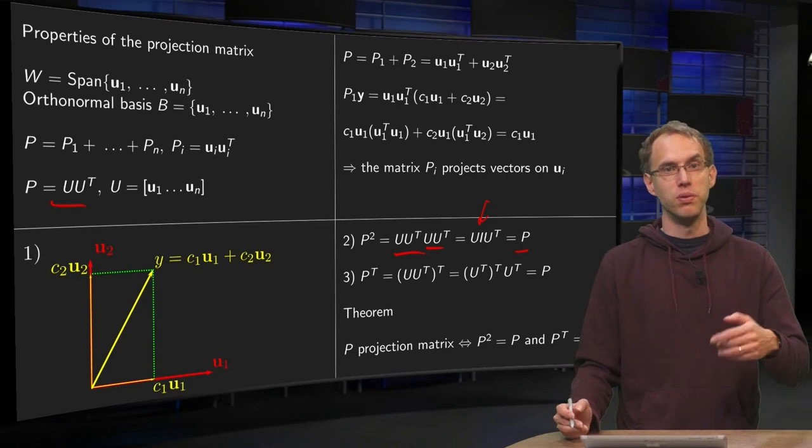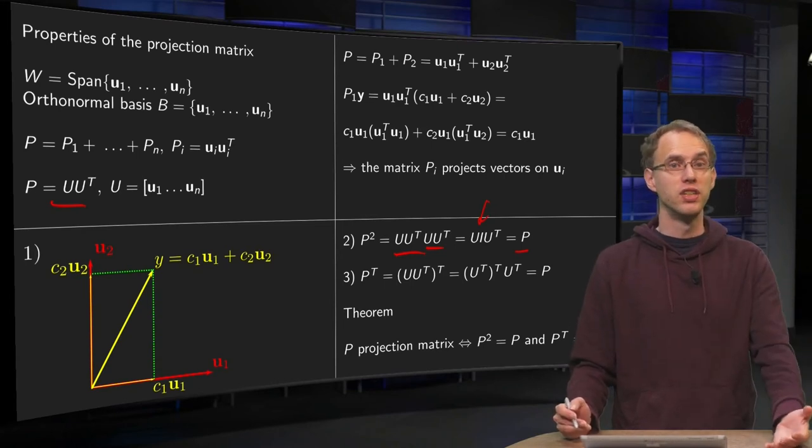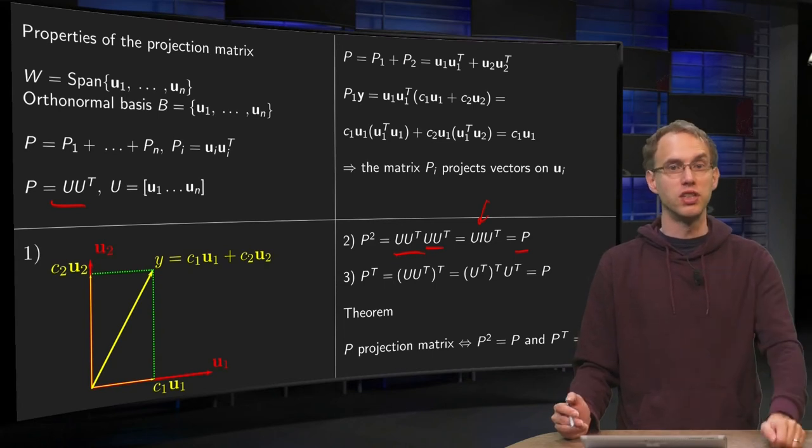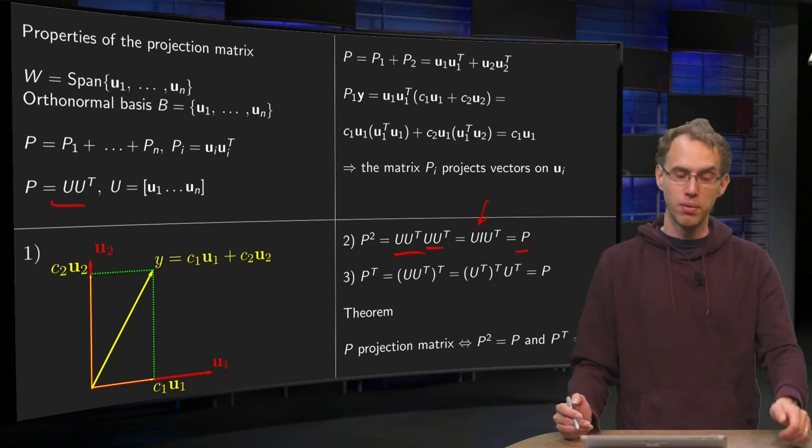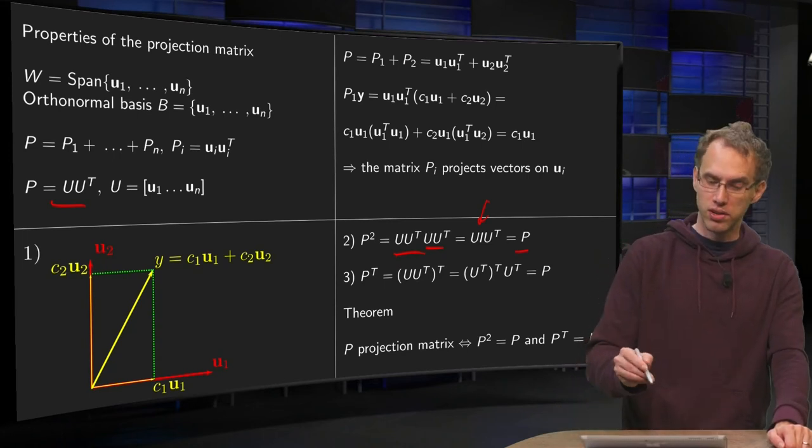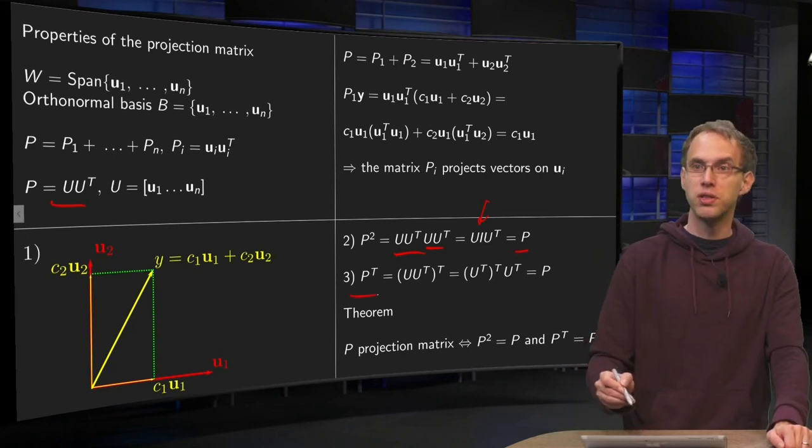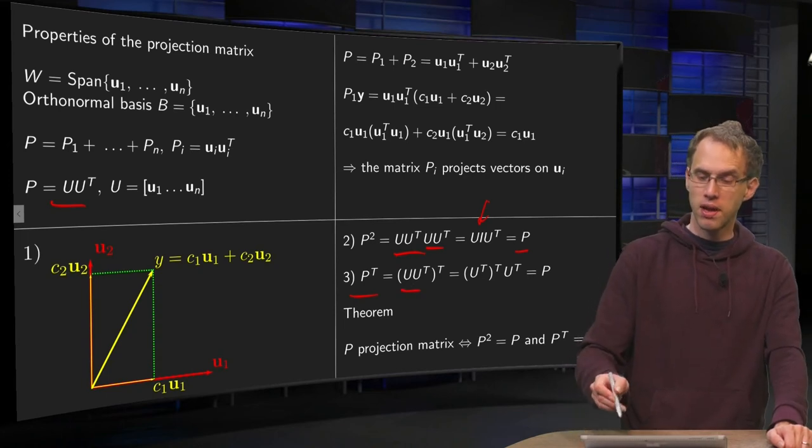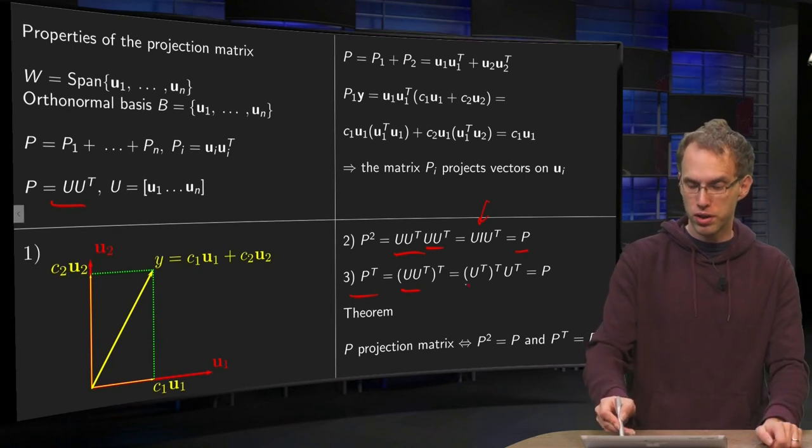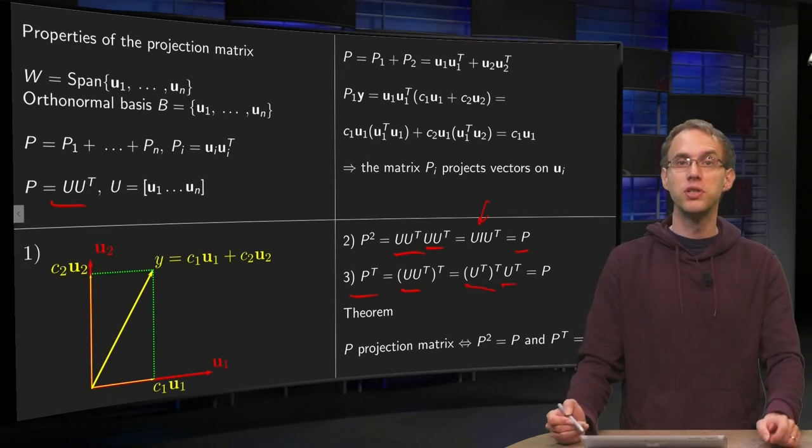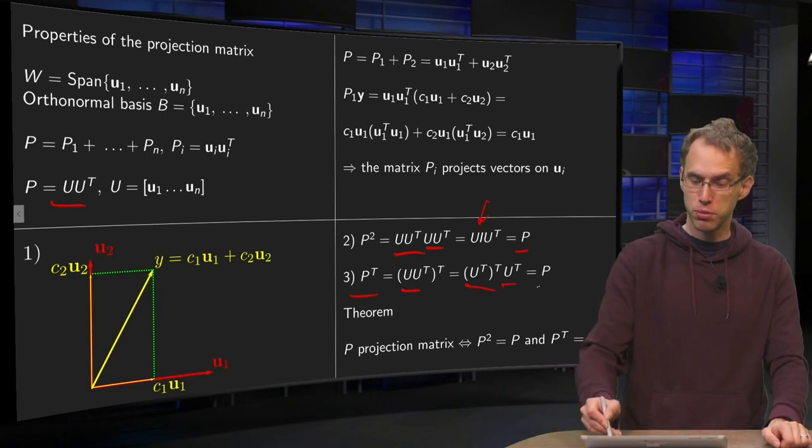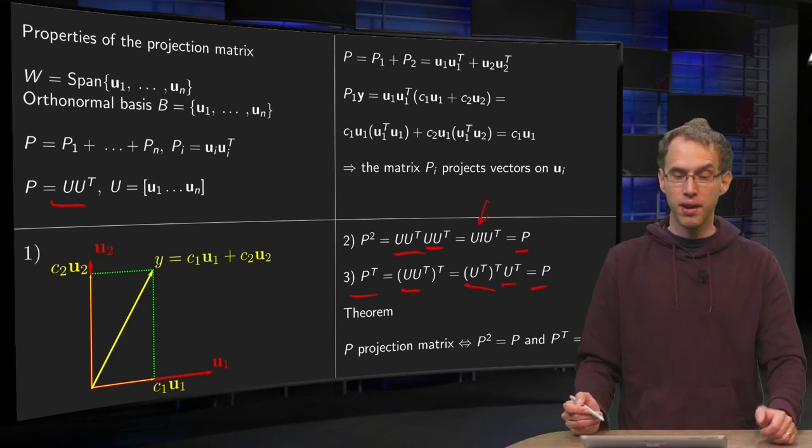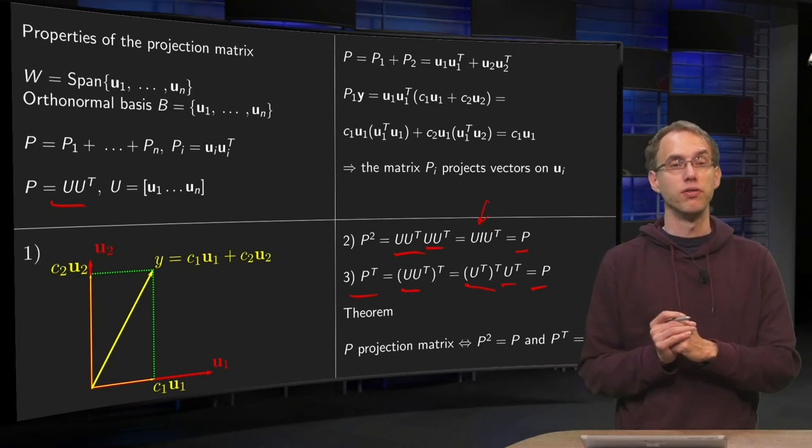If you take a look at the transpose, P transpose, then we take U times U transpose, transpose. Take transpose and invert order, so you get U transpose transpose times U transpose, which equals U times U transpose equals P. P transpose equals P, or P is symmetric. That holds for projection matrices.